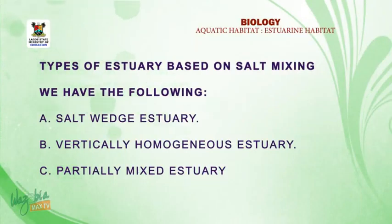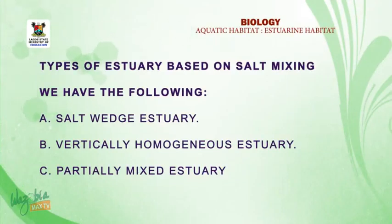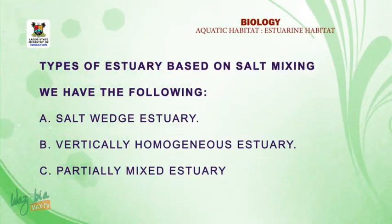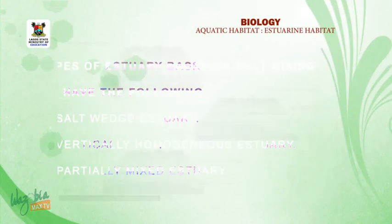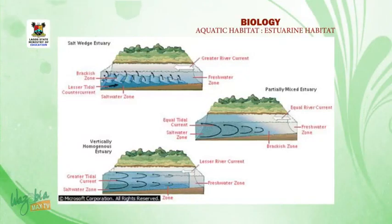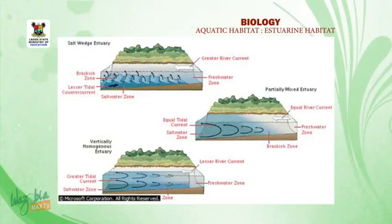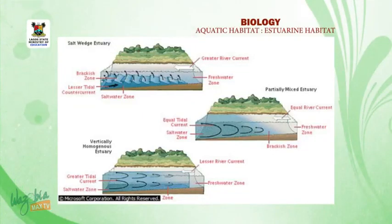There are three types under this category: A, salt wedge estuary; B, vertically homogeneous estuary; C, partially mixed estuary. Take a look at this diagram — it illustrates the three main types of estuaries. Tides, wind, wave motions, and river runoff all contribute to create various water conditions within estuaries.